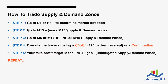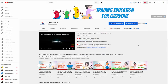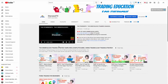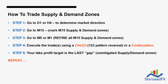Step four: execute the trade using a chalk pattern or one-two-three pattern reversal or continuation. If you are new to the chalk or one-two-three pattern reversal, go to my YouTube channel — there is a video called 'Let's Trade as Simple as One Two Three,' which is part 12 of the order block trading strategy series. That video will teach you all about the chalk and one-two-three pattern — this is how you execute your trade. Step five: your take profit target is the last unmitigated gap supply or demand zone, exactly the same as how you trade the order block.